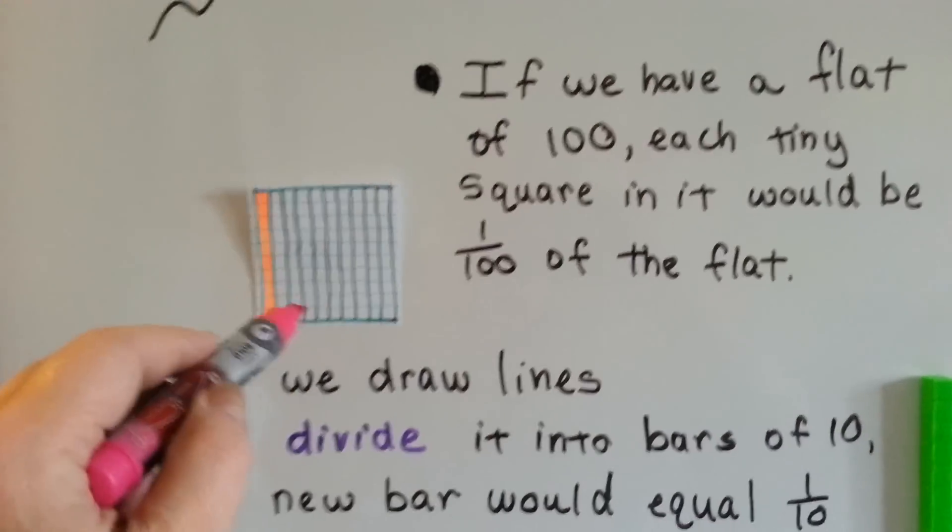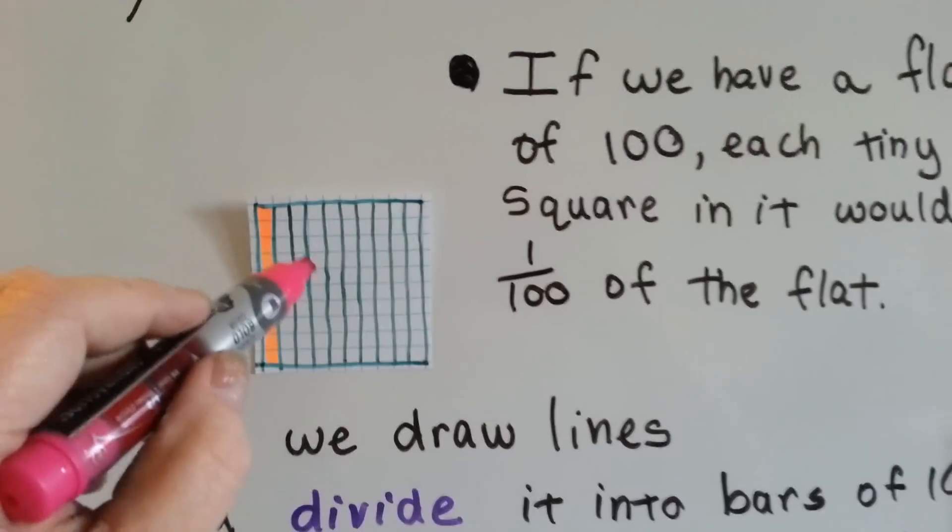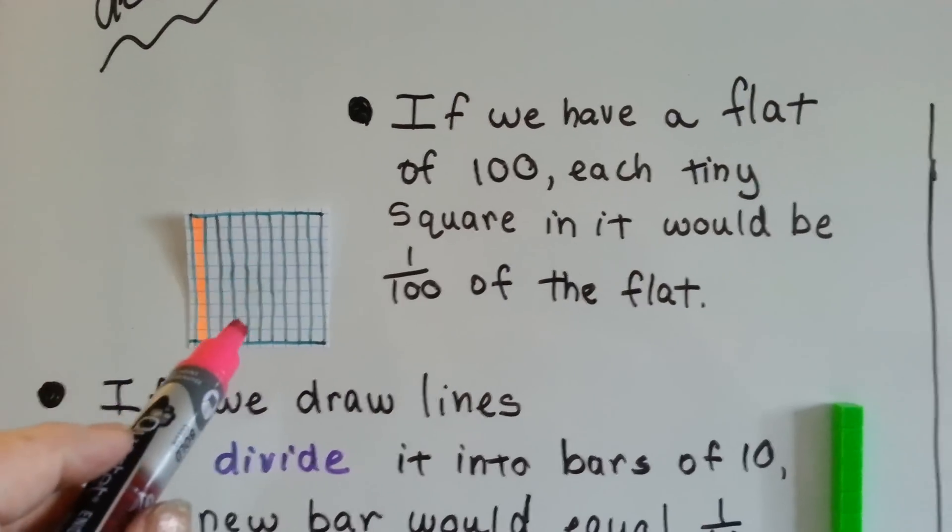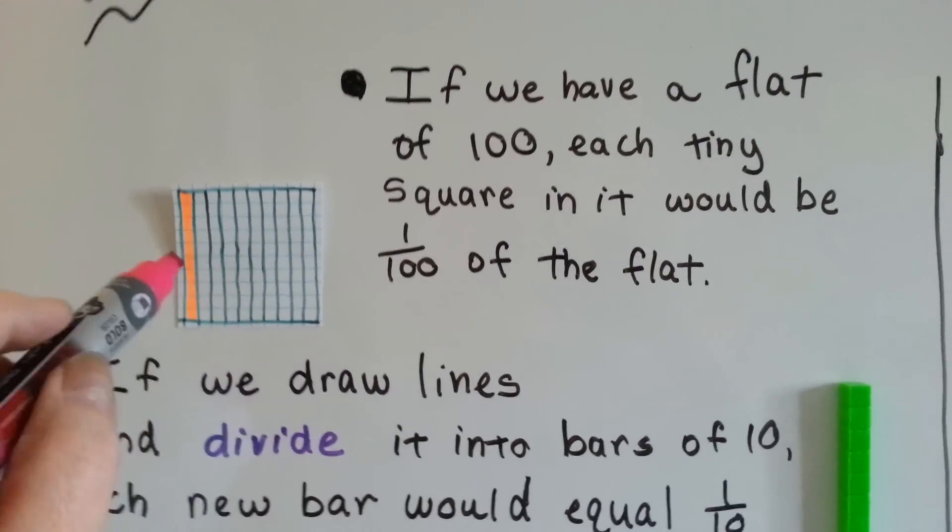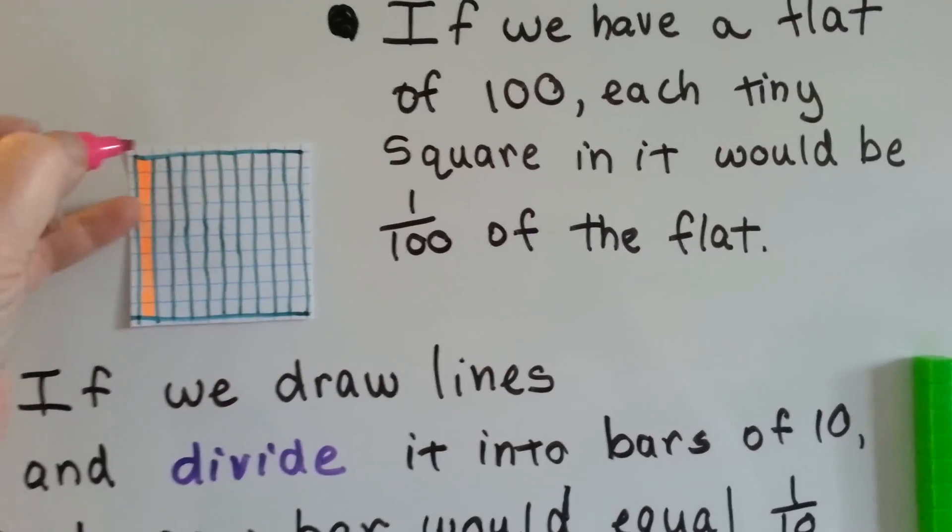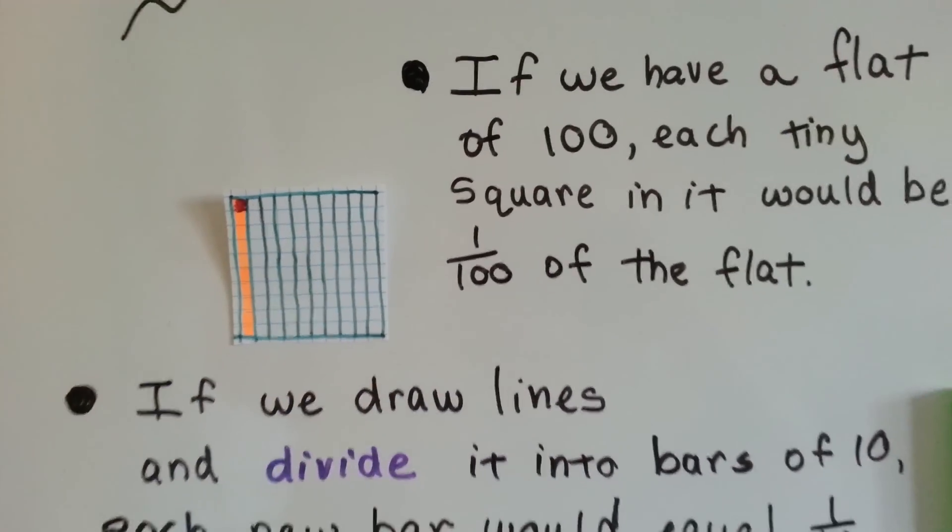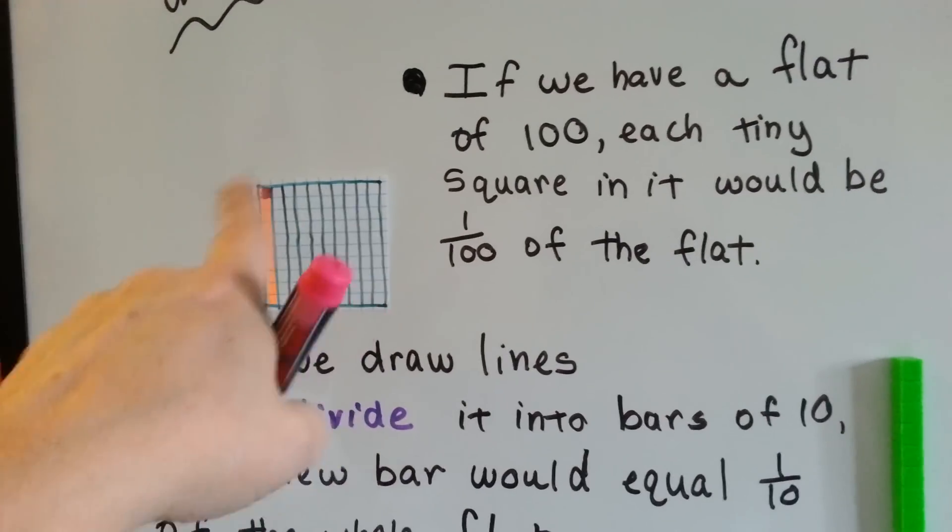If we have a flat of one hundred, each tiny little square in it would be one one hundredth of the flat. One tiny little square, like that, would be one one hundredth of this entire flat of a hundred.